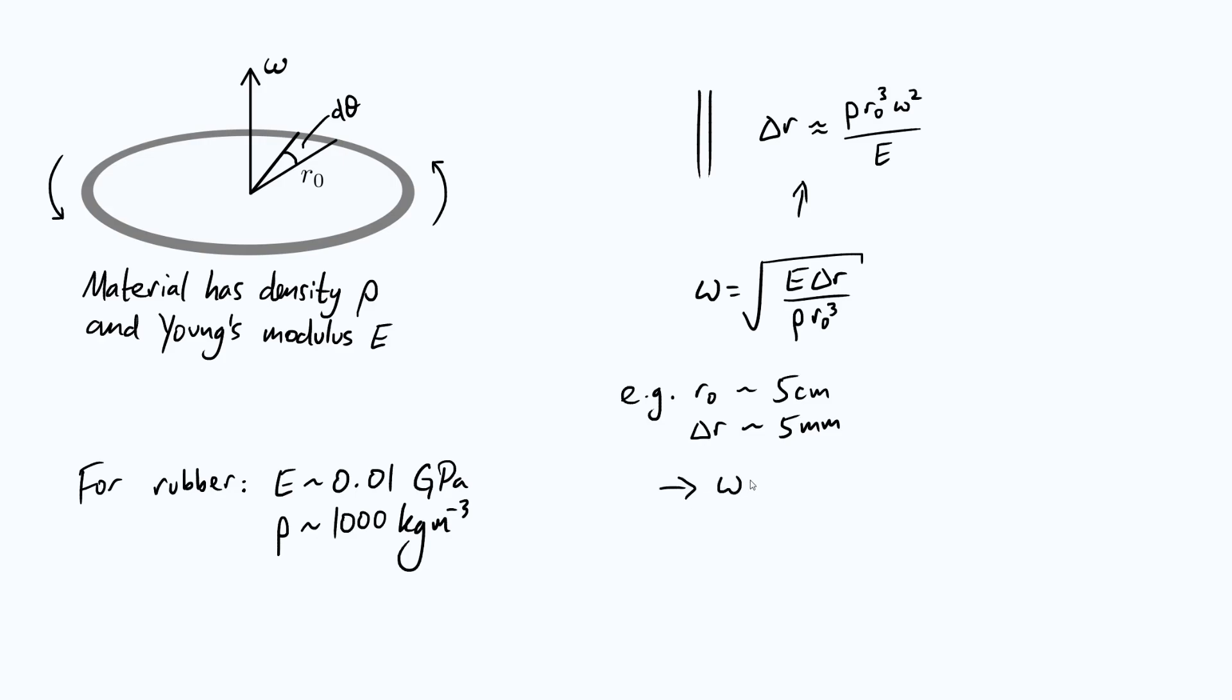we find that omega would be around 630 radians per second. Now what does that mean in terms of revolutions per second? Well because there are two pi radians in one revolution we just got to divide that by two pi,